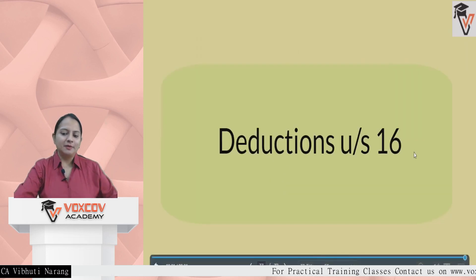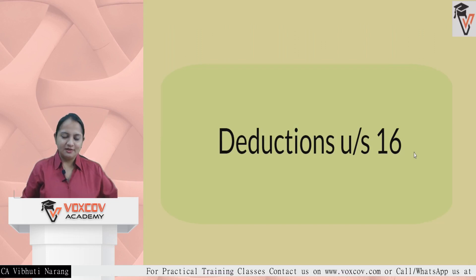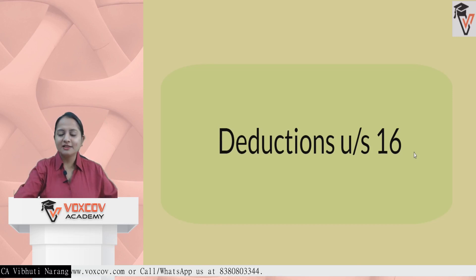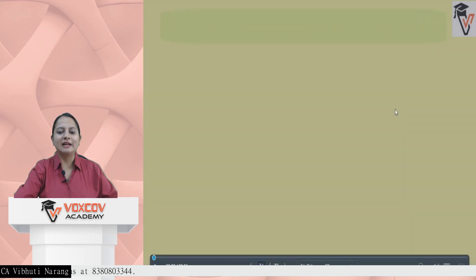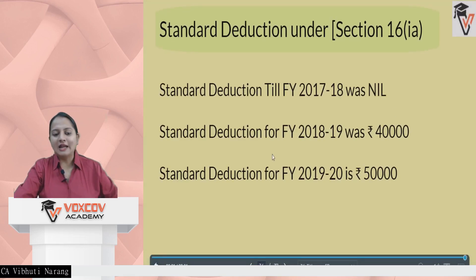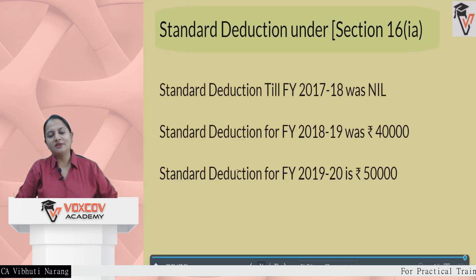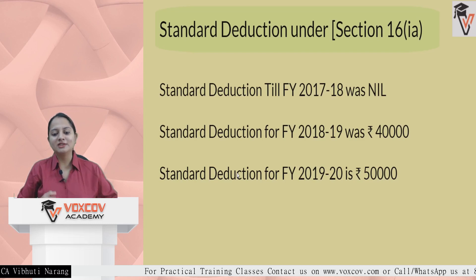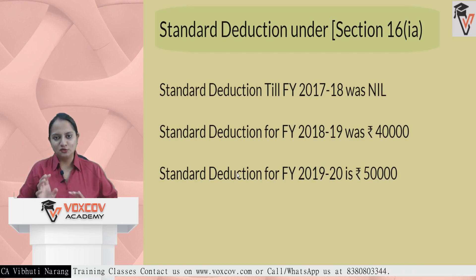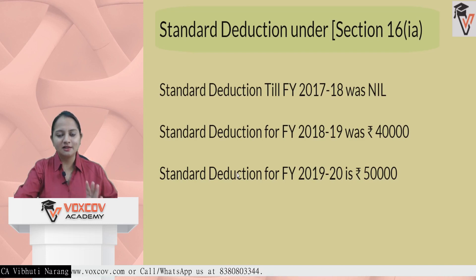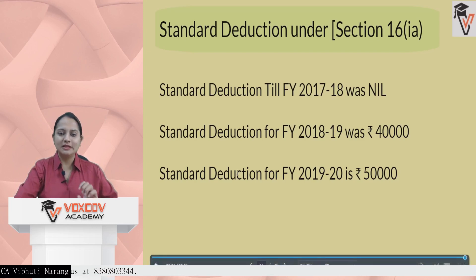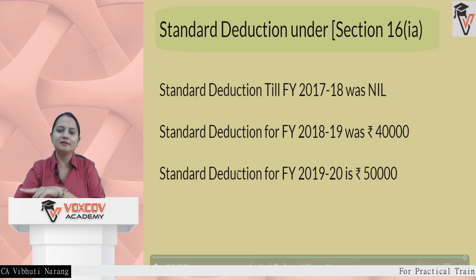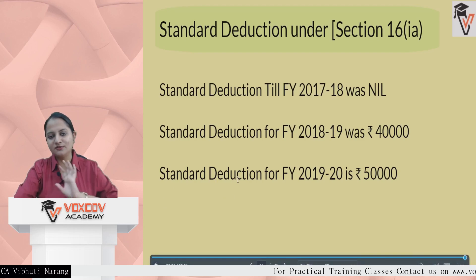Moving to deductions under Section 16 from gross salary, there are three important deductions. The first is the standard deduction — it was not available until FY 2017-18, was Rs. 5,000 per month in FY 2018-19, and from FY 2019-20 onwards it is Rs. 50,000. This standard deduction of Rs. 50,000 is available only to employees whose income is taxable under the head salary.